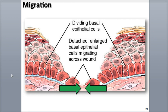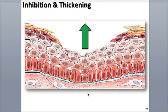When the epidermal cells from both sides meet each other, they stop migrating as a result of a cellular response called contact inhibition. Epidermal growth factor hormone is secreted, which causes the stratum basale cells to divide and replace the ones that have migrated into the wound. These cells can now divide further and form new strata, which thickens the repaired epidermis.